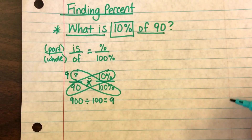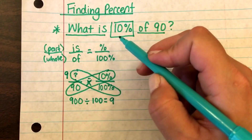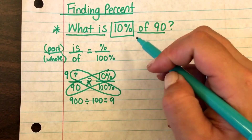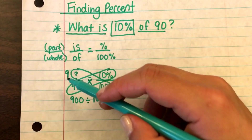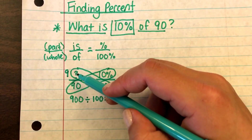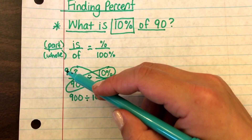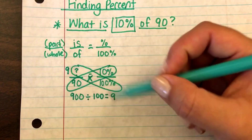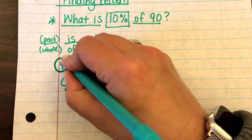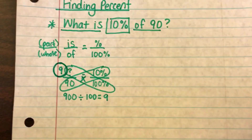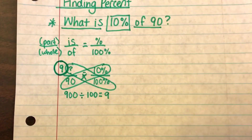The question mark is equal to nine. Going back to the question — what is 10% of 90 — the question mark was with 'is,' and we found out after doing the math that it's nine. There's our answer.